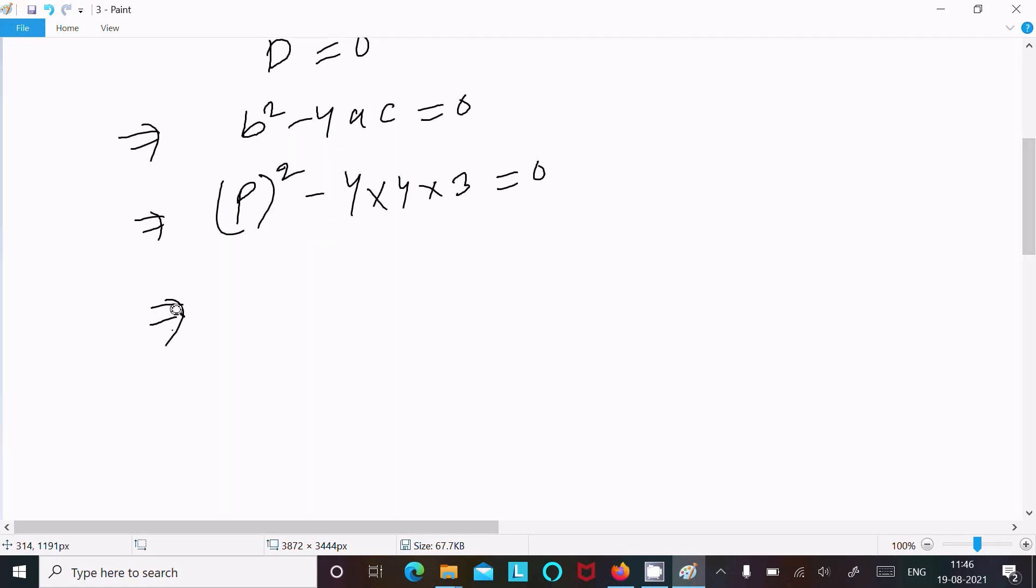This gives us p². Let me move the terms to the right side, so p² = 4 × 4 × 3.